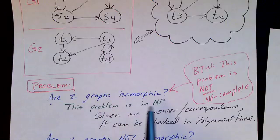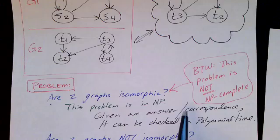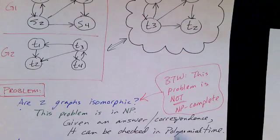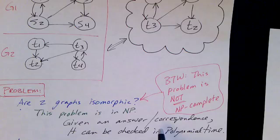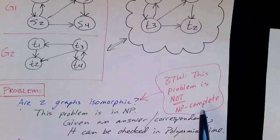This problem is in NP. Given an answer, that's our certificate. The answer is in the form of a correspondence—a number like 4312. We can then check and verify in polynomial time whether that is a solution. So this problem is in NP. Interestingly enough, this is an example of a problem that is not in the class NP-complete.